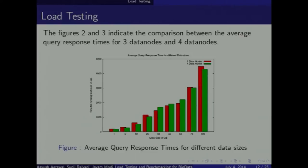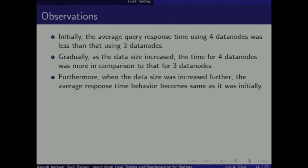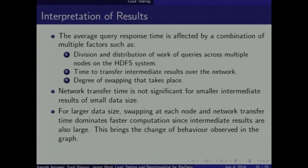This graph indicates the comparison between response time for three data nodes and four data nodes. For two data nodes we only had three data points so we avoided plotting that. Red is for three data nodes and green is for four. We can observe some peculiarities: in most parts green is less than red, but in one middle section green is more than red, and then it goes back to less. We have tried to explain these peculiarities in further slides. The line graph represents the same data, with the dotted line for four data nodes and the solid line for three, crossing at two points.